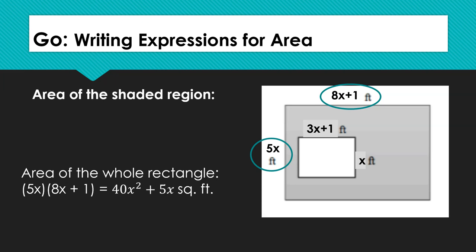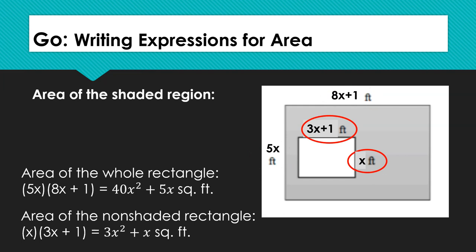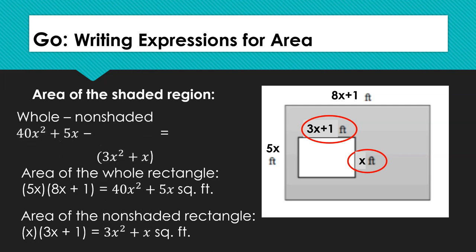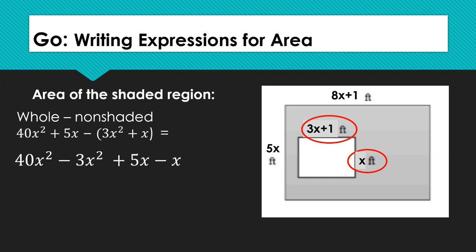Next, we will need to find the area of the smaller, unshaded rectangle located inside the larger shaded rectangle. We find that area by multiplying its length x by its width 3x plus 1. Again, we will use the distributive property to multiply, and we find that the area is 3x squared plus x. Finally, we will subtract the smaller, non-shaded area from the larger shaded rectangle by combining like terms. We will subtract 3x squared from 40x squared, which leaves us with 37x squared. We also need to subtract 1x from the 5x, which leaves us with 4x. So the area of the shaded portion of the rectangle is 37x squared plus 4x square feet.